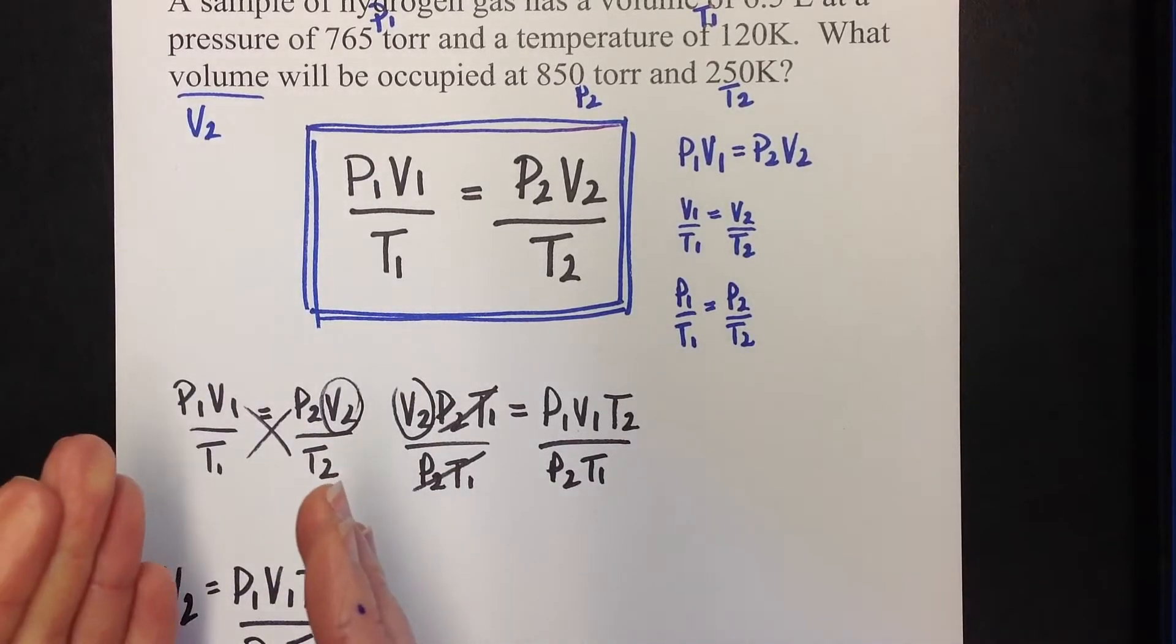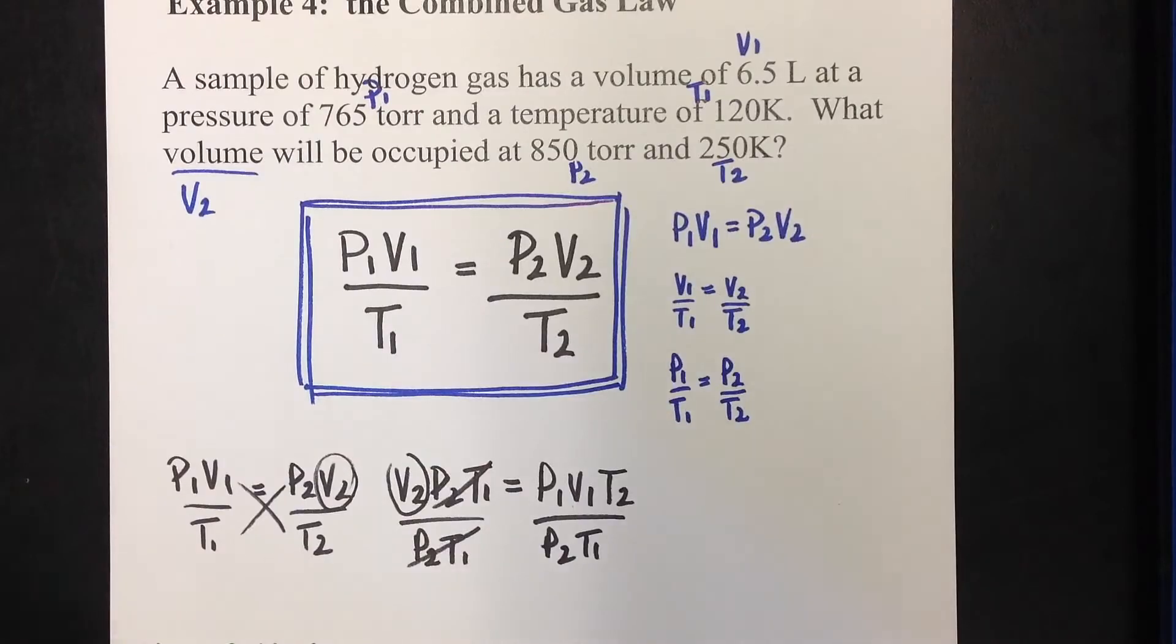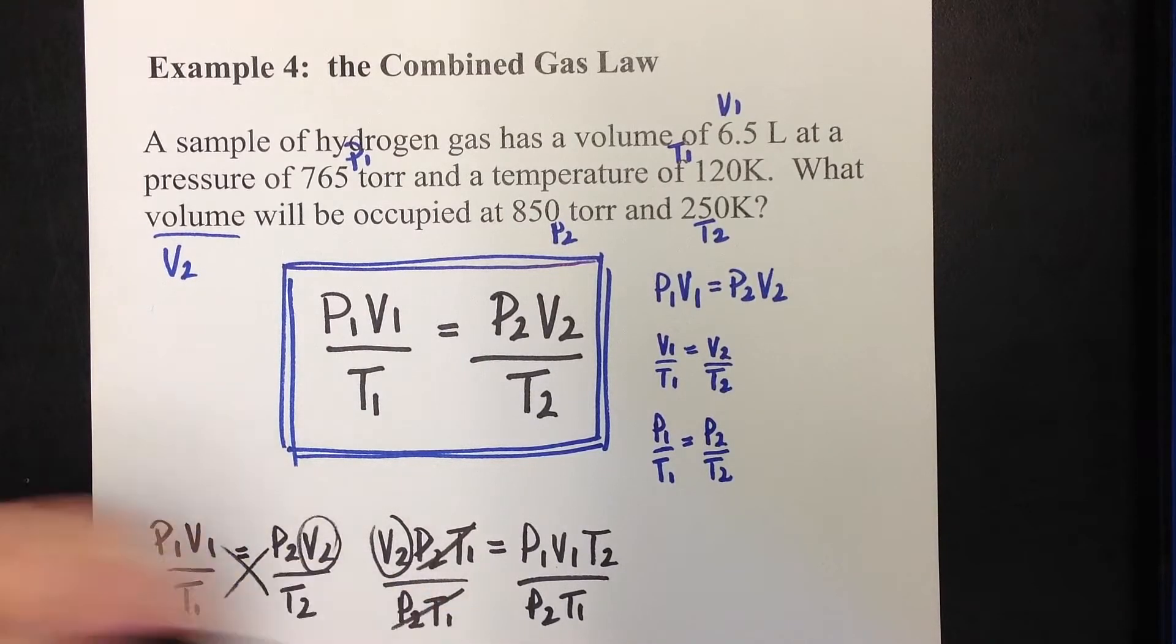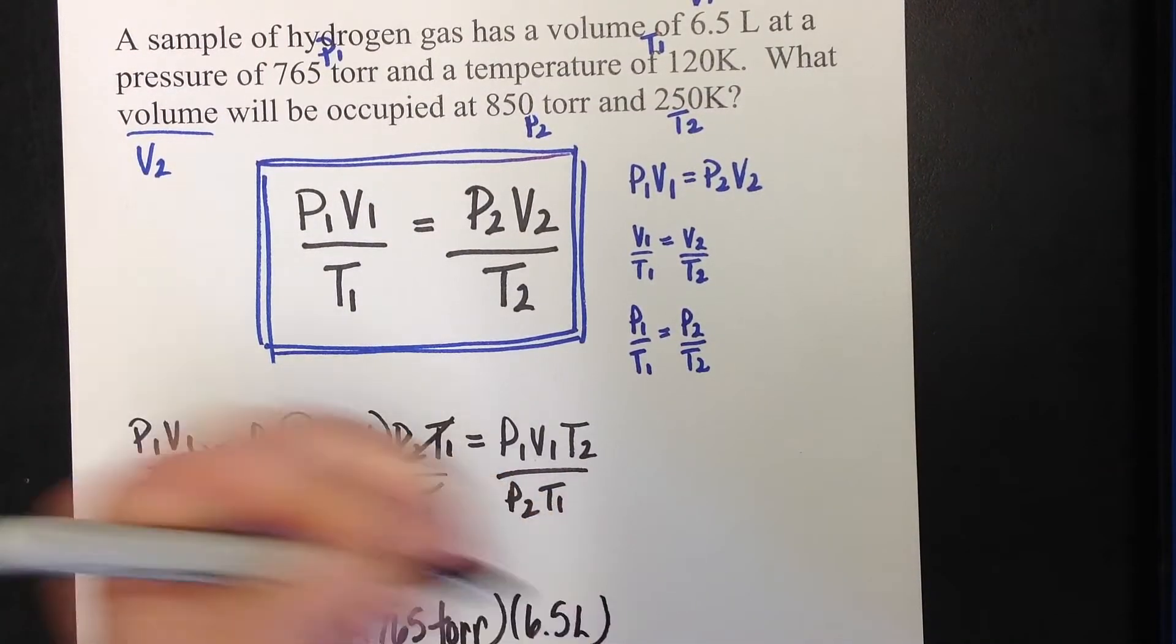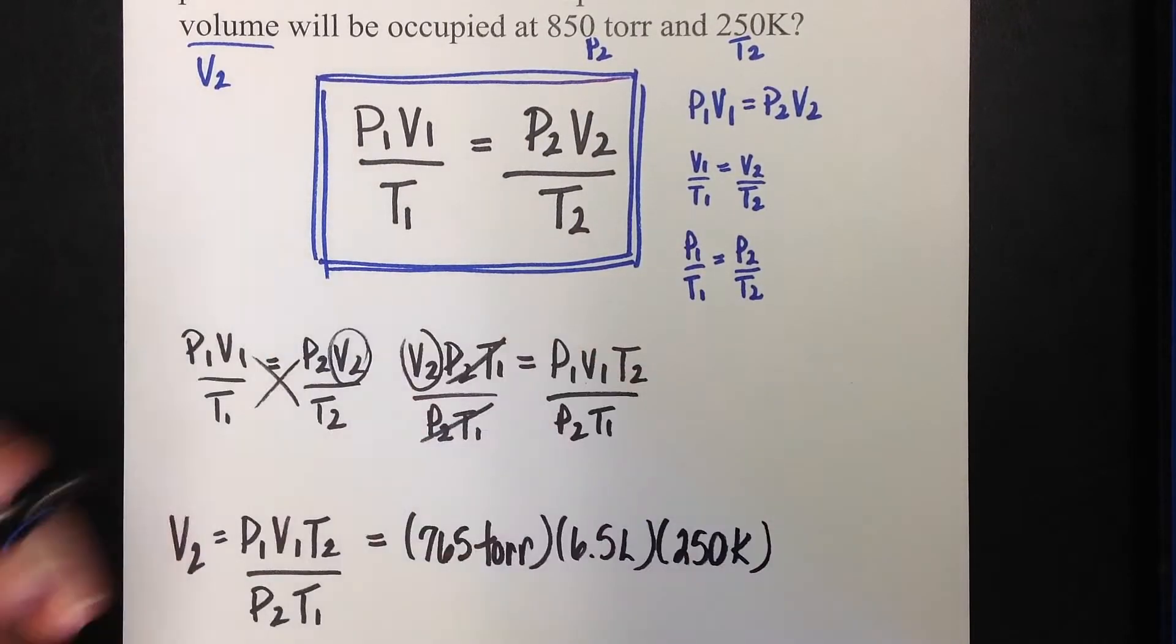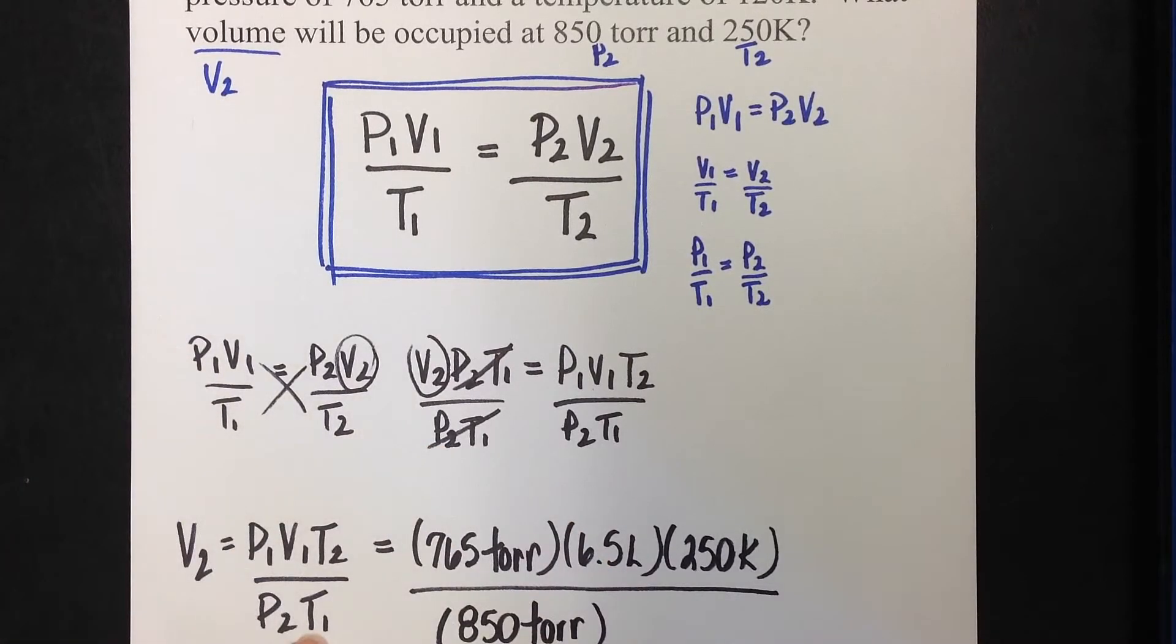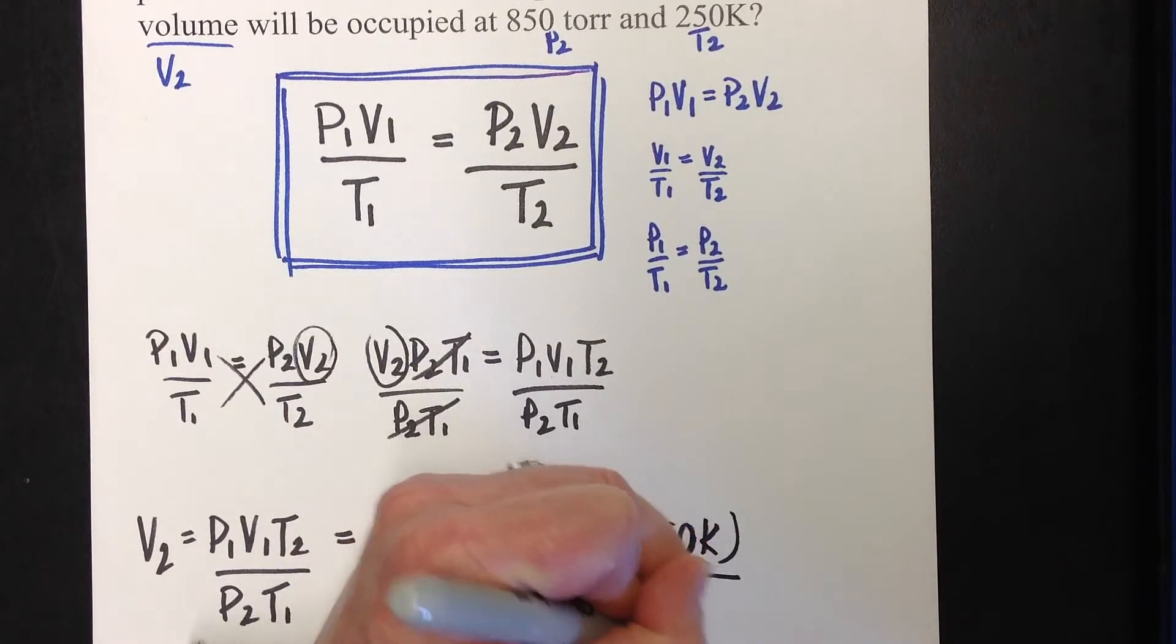So there's my formula - V2 equals P1V1T2 over P2T1. I have everything exactly where it's supposed to be. I've already got everything labeled up here. I'm literally just going to pick these things up and put them where they go. P1 was 765 torr - torr is just a unit of pressure, that's what they gave me. Volume 1 was 6.5 liters. Temperature 2, be careful there, it's the second one, is 250 K. You're going to divide all that by P2, which is 850 torr, and T1, which was 120 K. Just be careful not to get those T's mixed up - that's where I always make my mistakes.